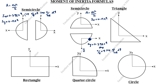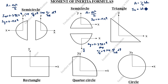Do not confuse this one. Triangle. What is the area of triangle formula? What is the moment of inertia about the x-axis and y-axis? Ix is equal to bh cube by 36. Iy is equal to h b cube by 36.